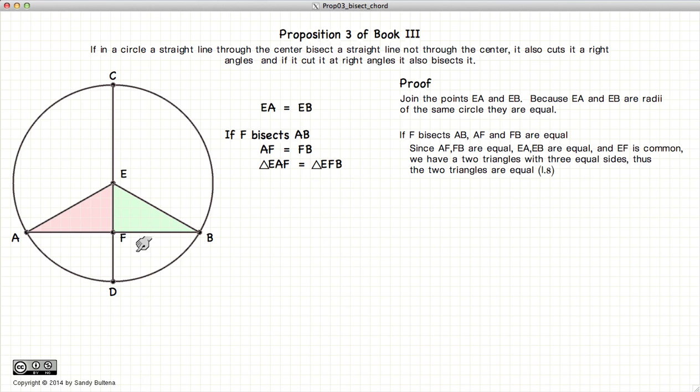and thus the two triangles are equal in all respects, according to Proposition 8, in which case all the angles are equal, so alpha will equal beta.